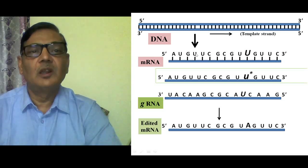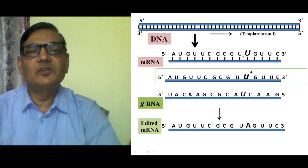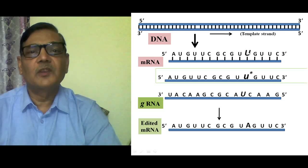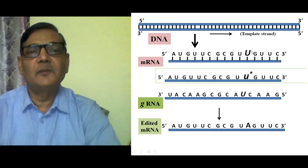Going through the nucleotide sequence from its five-prime end, we find AUG — the initiator codon — followed by another codon UUC, then GCG. Now this fourth codon is UUG, and the middle U in it needs to be changed — it has to be substituted.